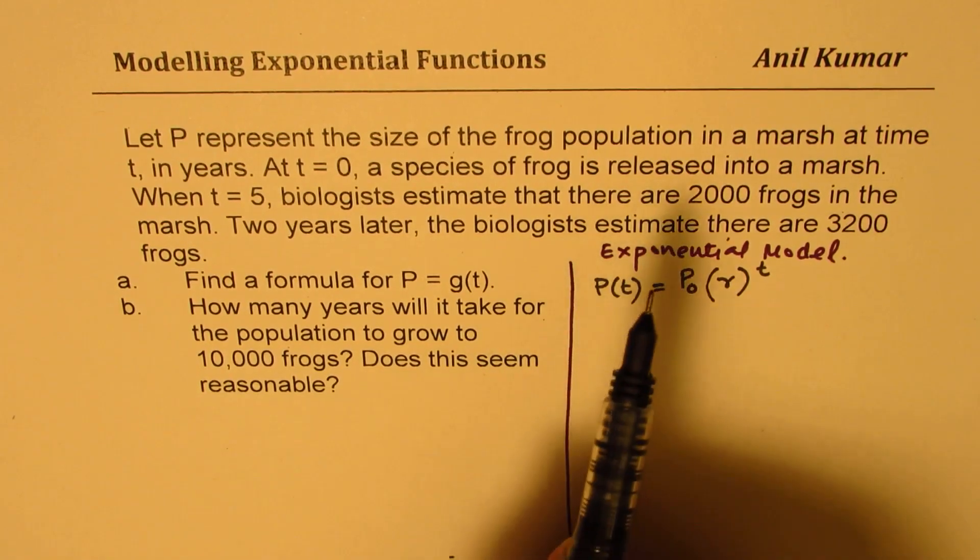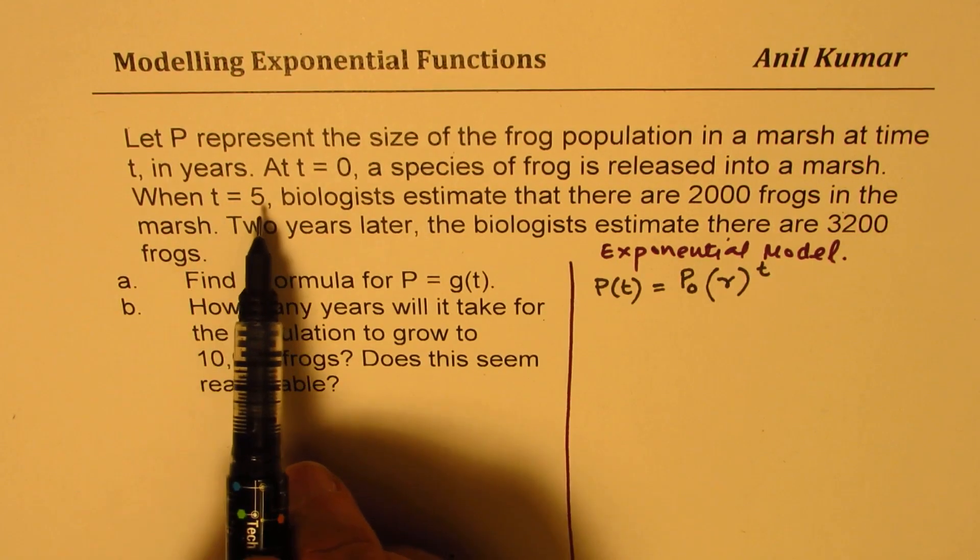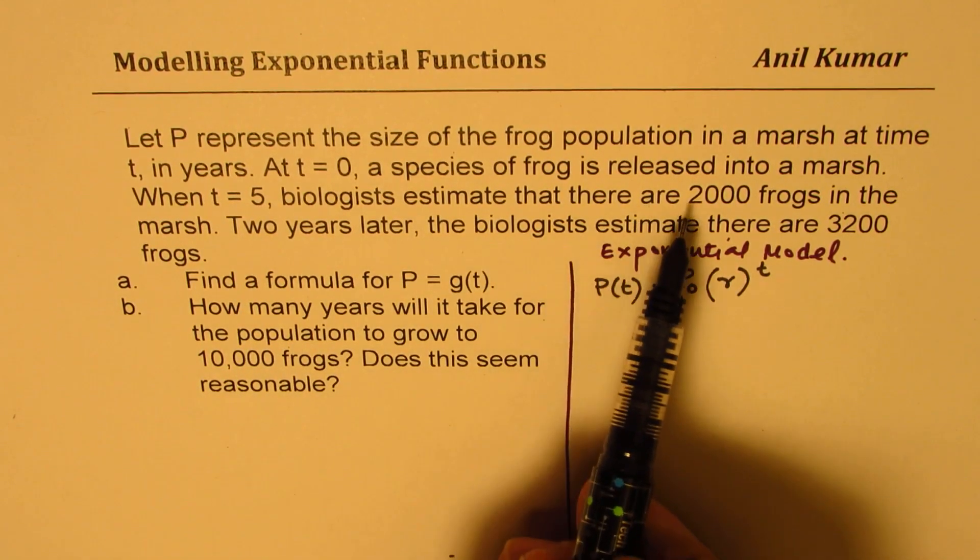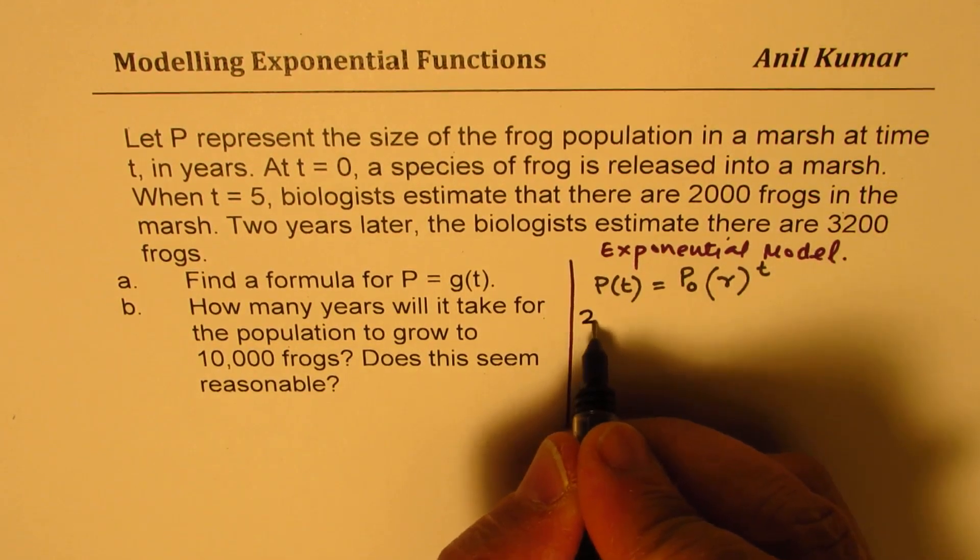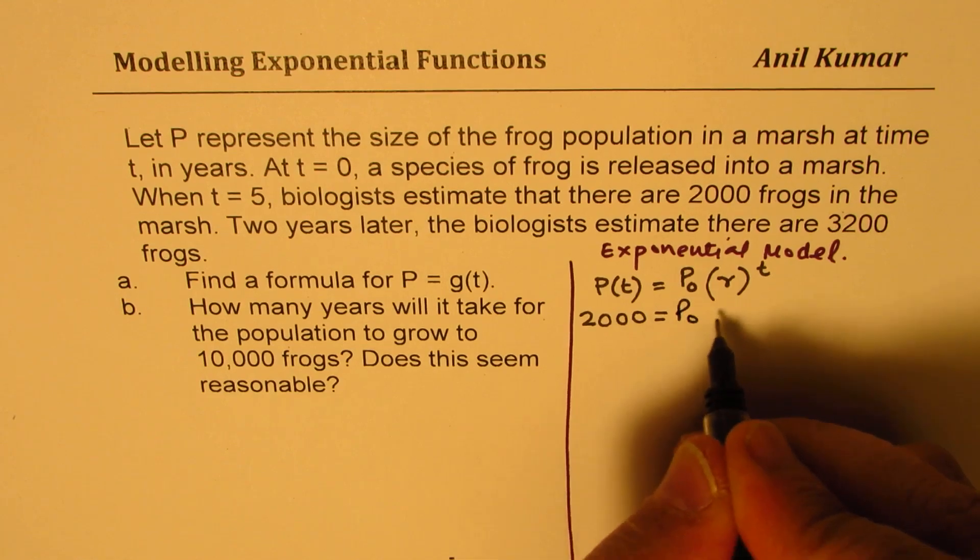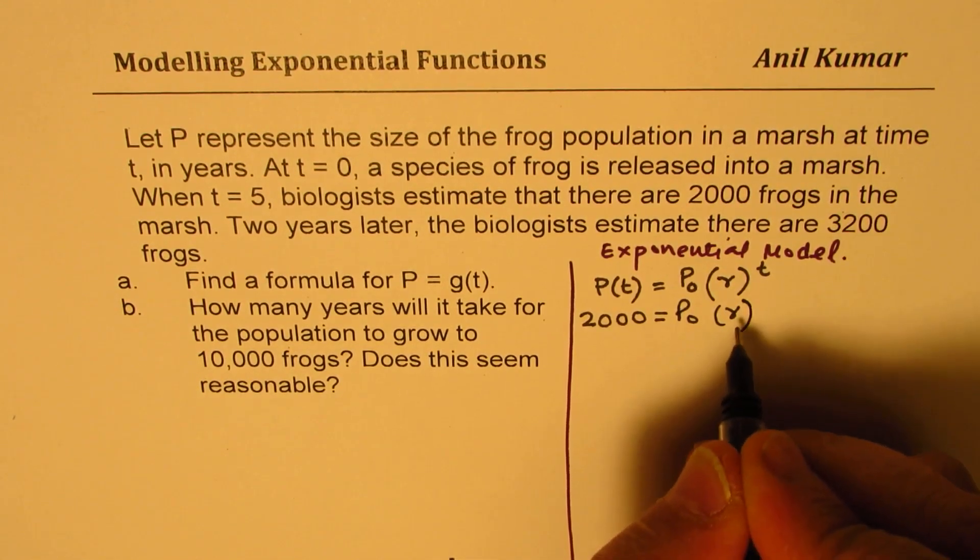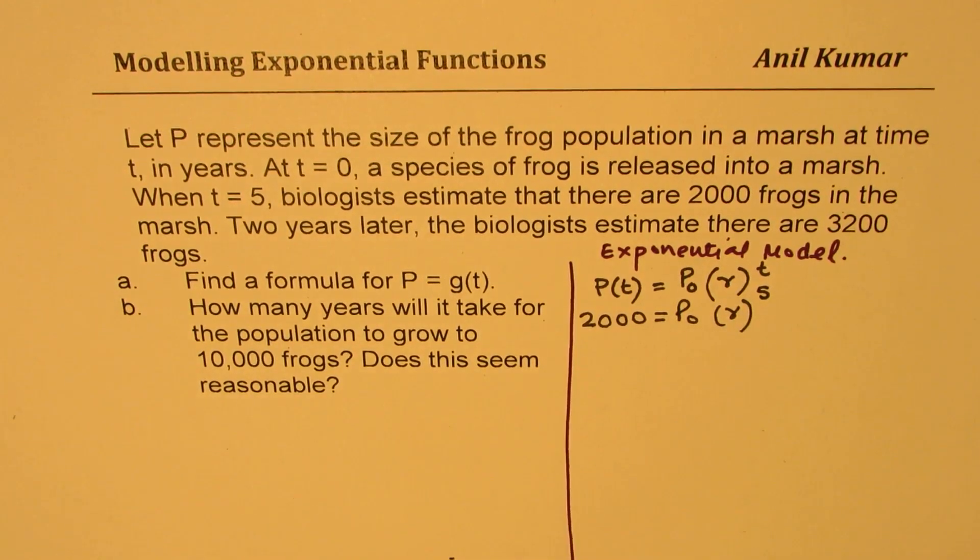Now, we know that after five years, when t equals 5, estimated population was 2,000 frogs. So we got 2,000 here. We don't know the initial population. We don't know the rate of growth. But we know that after five years, this was the situation. So that is our equation number one.